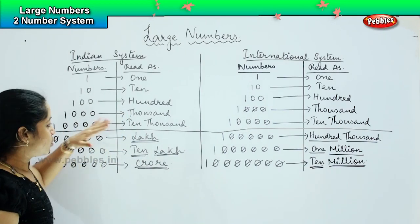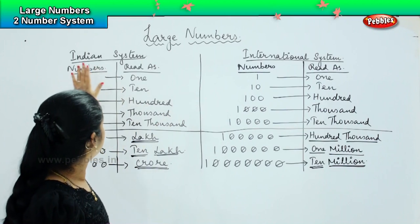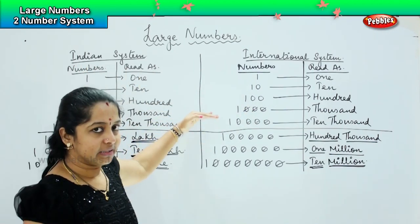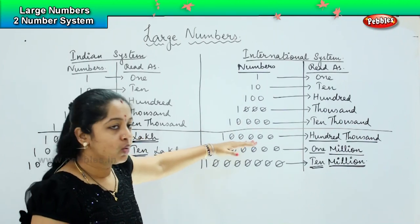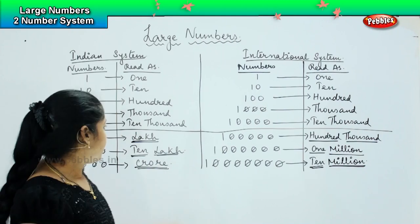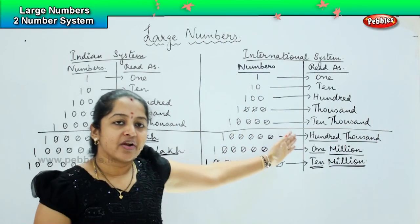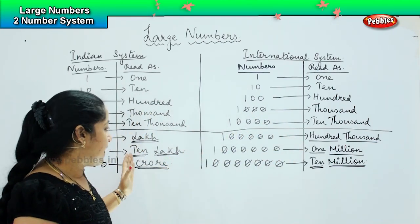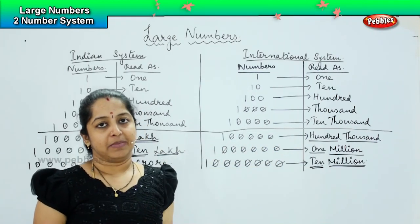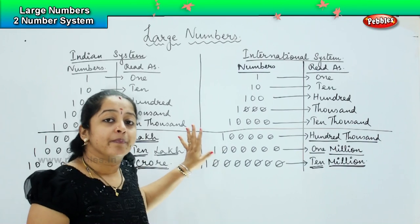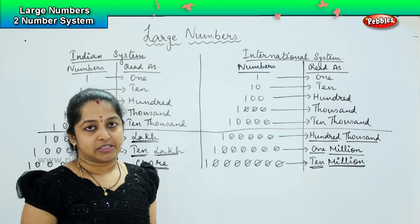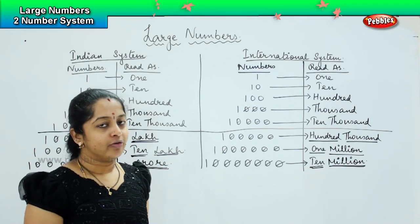So to summarize the difference: till 10,000 it remains the same for both the Indian system and the international system. But after 10,000, the place value remains the same but the way they are named differs. Our lakh is termed as 1,00,000; our 10 lakh becomes 1 million; and our 1 crore becomes 10 million. You have to keep these basic things in mind in order to solve your questions, and you need to be very careful while solving them.